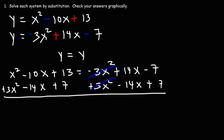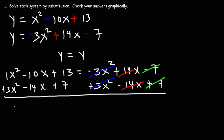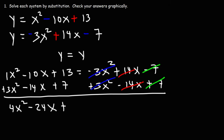The terms on the right cancel. On the left, 1x squared plus 3x squared gives 4x squared. Then negative 10 minus 14 gives negative 24x. And 13 plus 7 gives positive 20. So we have 4x squared minus 24x plus 20 equals zero.